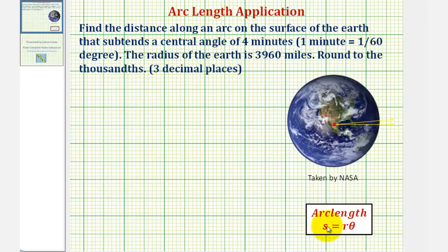So we'll be using the arc length formula given here, where the arc length s is equal to the length of the radius r times theta, where theta is the central angle measured in radians.